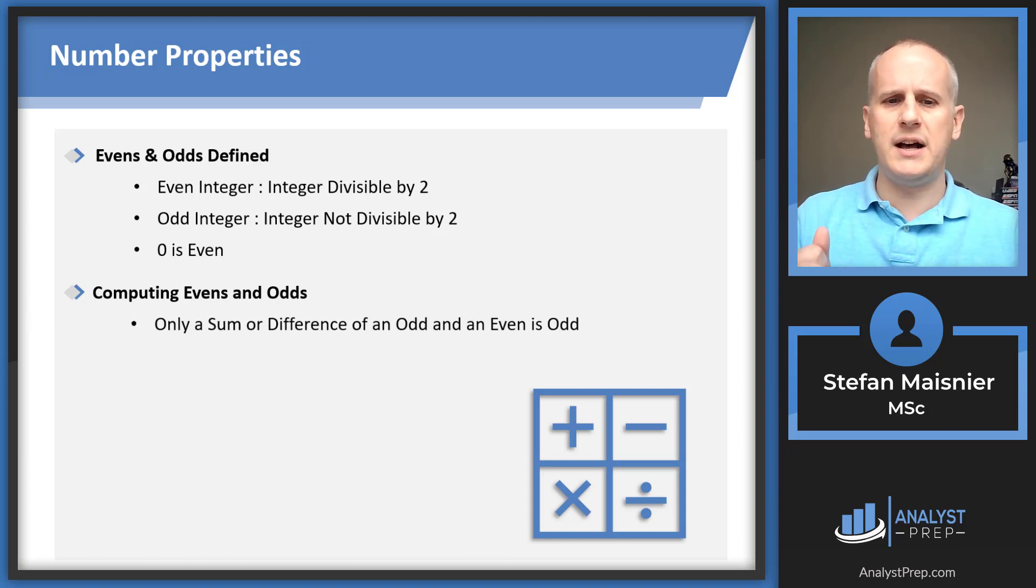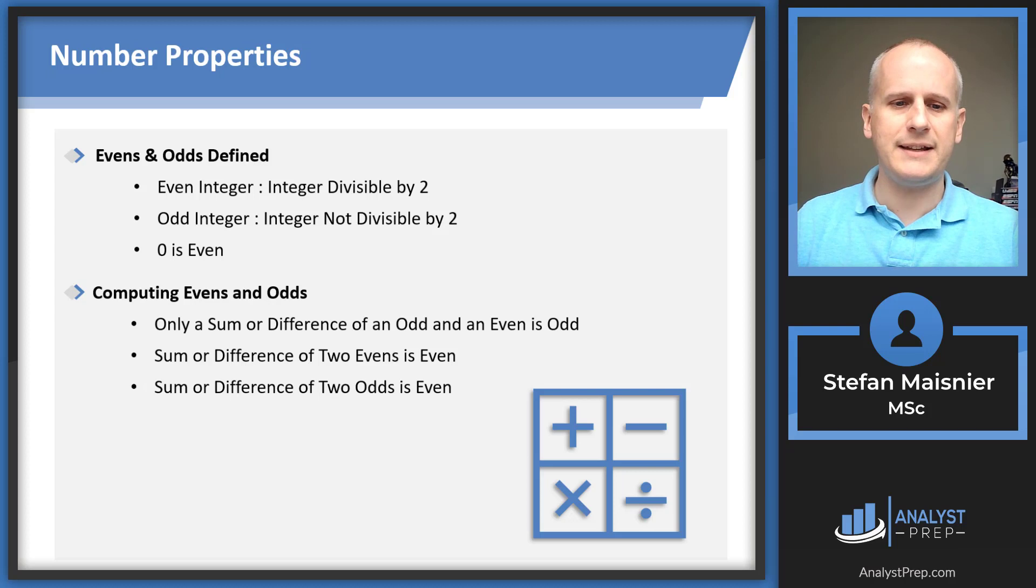Only a sum or difference of an odd and even is odd. So three plus two is five, it's odd. That's the only way to get an odd. However, the sum or difference of two even values is even. Four plus two remains even, it becomes six. Four minus two becomes two, remains even. Same thing with two odds because you lose the leftover basically. Three plus one becomes even. Three minus one becomes two, it's even.